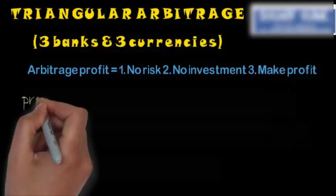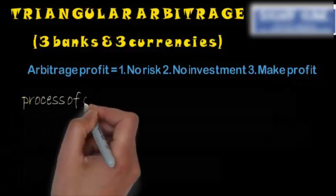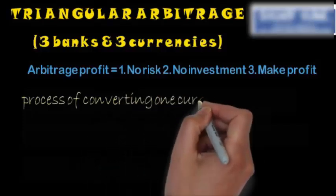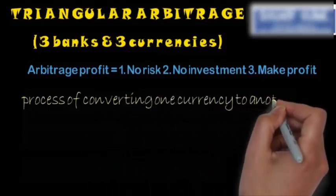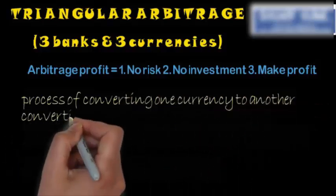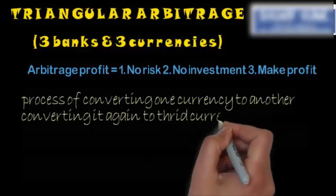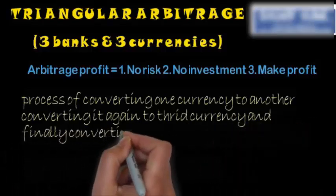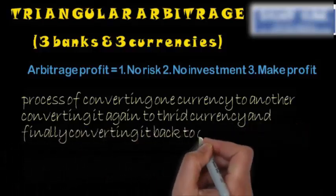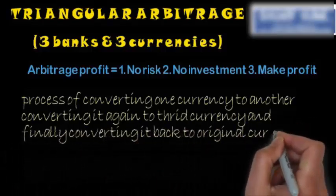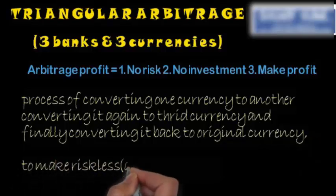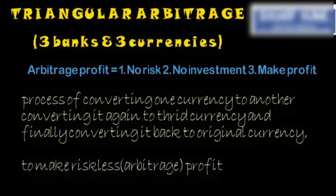What is the process of Triangular Arbitrage? It is the process of converting one currency to another, then that currency to a third currency, and finally returning to the original currency — while making a riskless arbitrage profit.